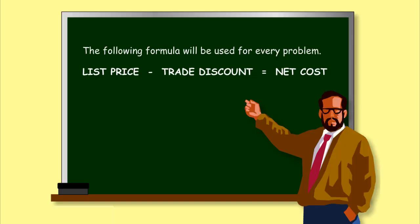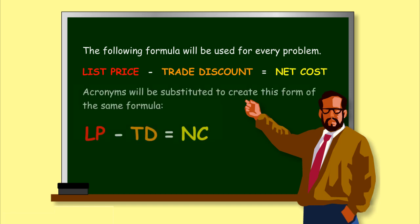The following formula will be used for every problem. List Price minus Trade Discount equals Net Cost. Acronyms will be substituted to create this form of the same formula. LP minus TD equals NC.